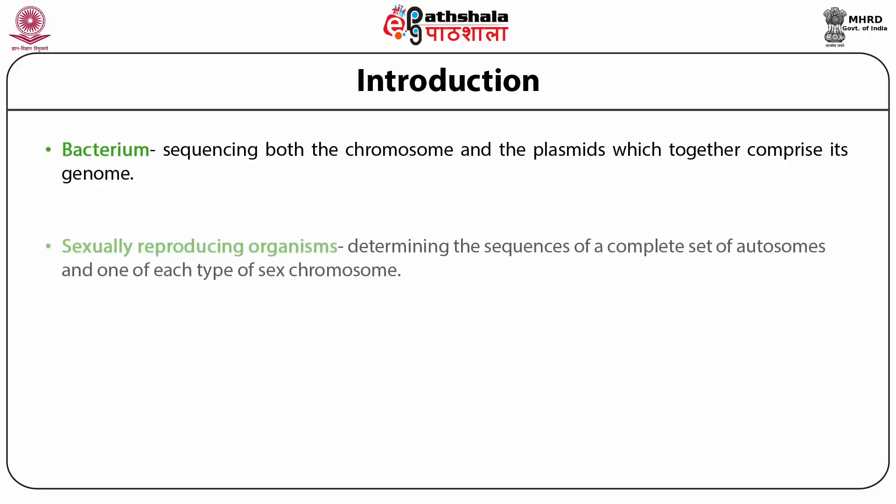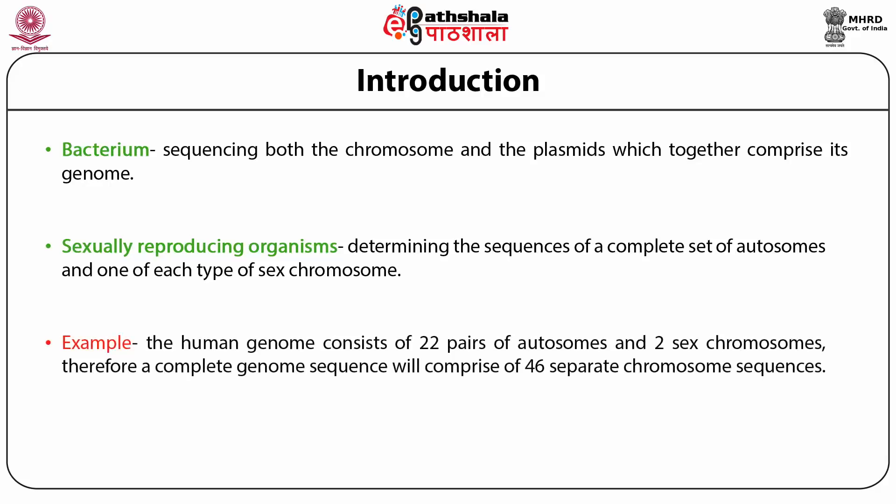In the case of a sexually reproducing organism, sequencing means determining the sequence of a complete set of autosomes and one of each type of sex chromosome. For example, the human genome consists of 22 pairs of autosomes and two sex chromosomes. Therefore, a complete genome sequence will comprise 46 separate chromosome sequences.